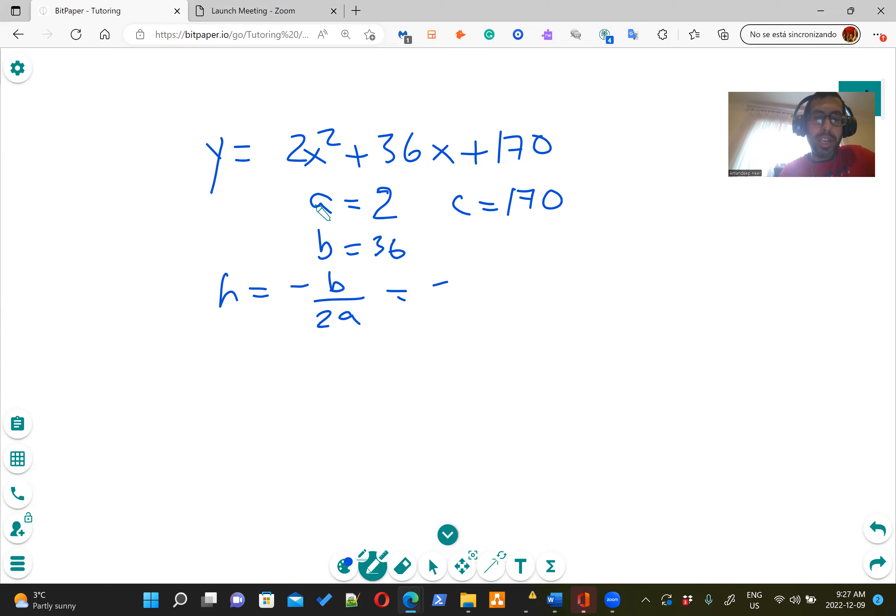So it's negative 36 divided by 2 times 2, which is basically negative 9. So that's your H.